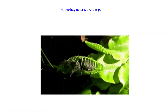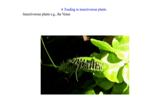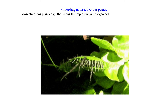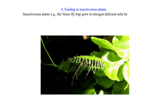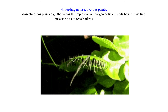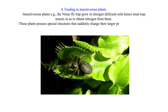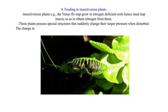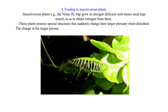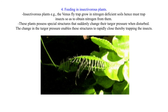4. Feeding in insectivorous plants. Insectivorous plants, for example the Venus flytrap, grow in nitrogen-deficient soils and hence must trap insects so as to obtain nitrogen from them. These plants possess special structures that suddenly change their turgid pressure when disturbed. The change in turgid pressure enables these structures to rapidly close, thereby trapping the insects.